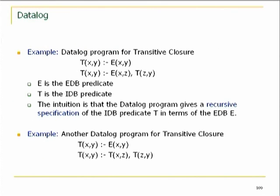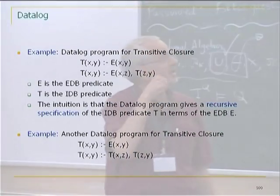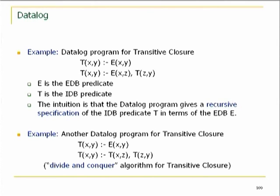Let's look at two examples. First, transitive closure reincarnated as a Datalog program. We have a program with two rules. T says there is a path from X to Y: either there is an edge from X to Y, or there is a Z such that there is an edge from X to Z and a path from Z to Y. We can also have two recursive predicates: odd(X,Y) says there is a path of odd length from X to Y, and even(X,Y) says there is a path of even length. Here one is used to define the other — this is a case of mutual recursion.